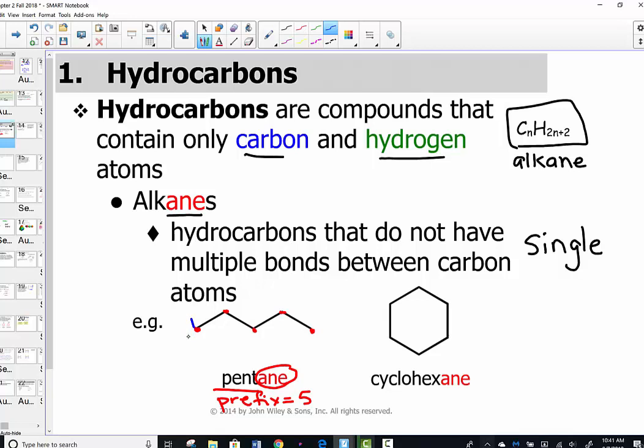Now notice this is a linear understanding based on the SP3 hybridization. There's nothing straight about it geometrically, but it is a straight chain. There's no branches, there's no cyclic structures, so we call that a straight chain.